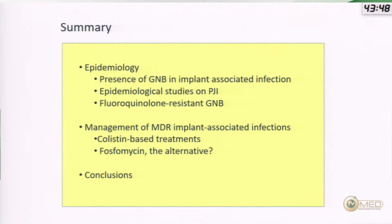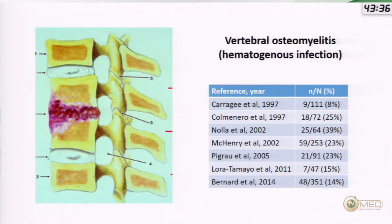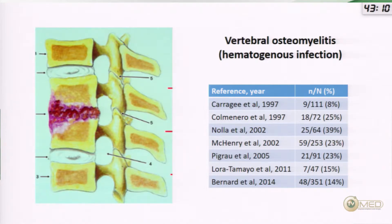Bone and joint infection always gets new antibiotics a little slower because we need long clinical research with long-term follow-up. Yesterday we had a brilliant talk by Professor Salles on hematogenous vertebral osteomyelitis. In hematogenous osteomyelitis, we have a quite constant rate of around 10 to 30 percent of infections by gram-negatives. Bone and joint infection is the kingdom of gram-positives, so the role of gram-negatives is less frequent.